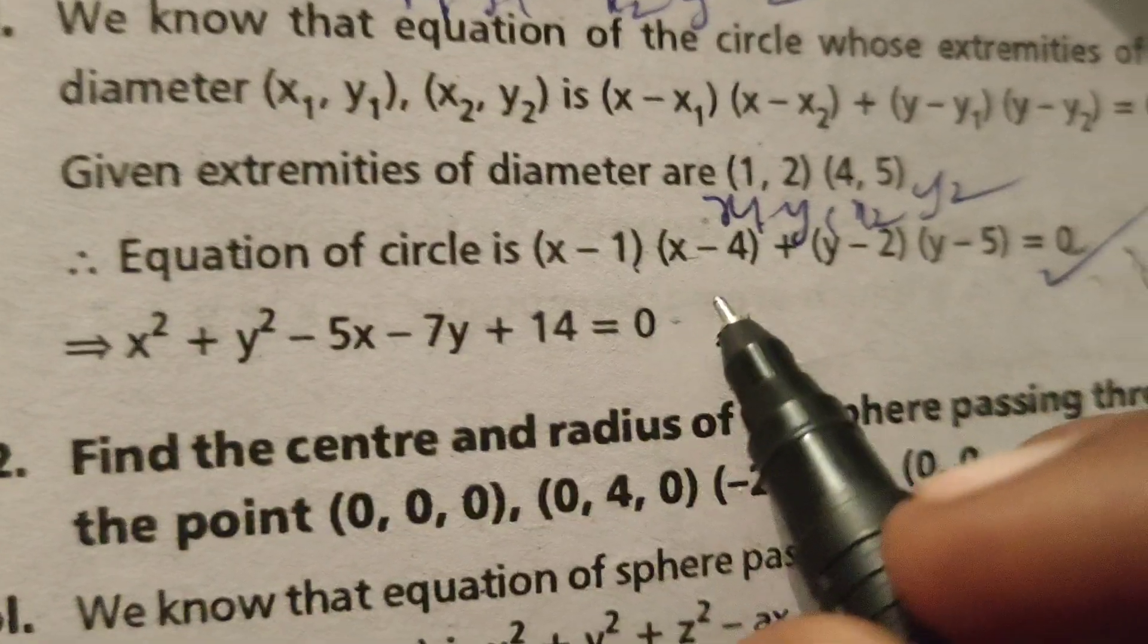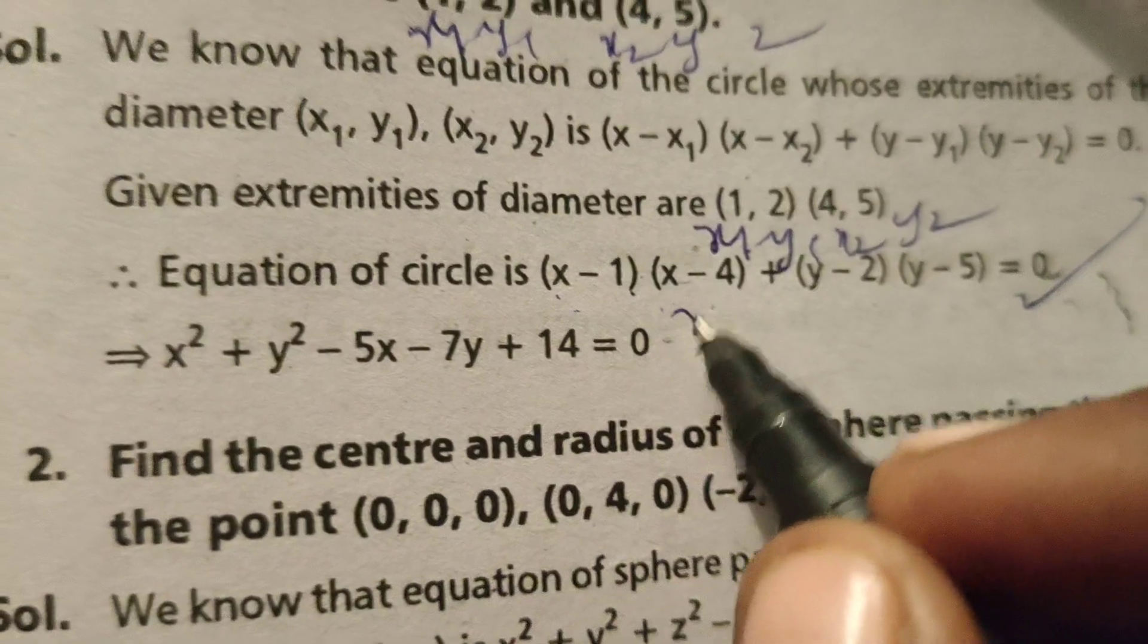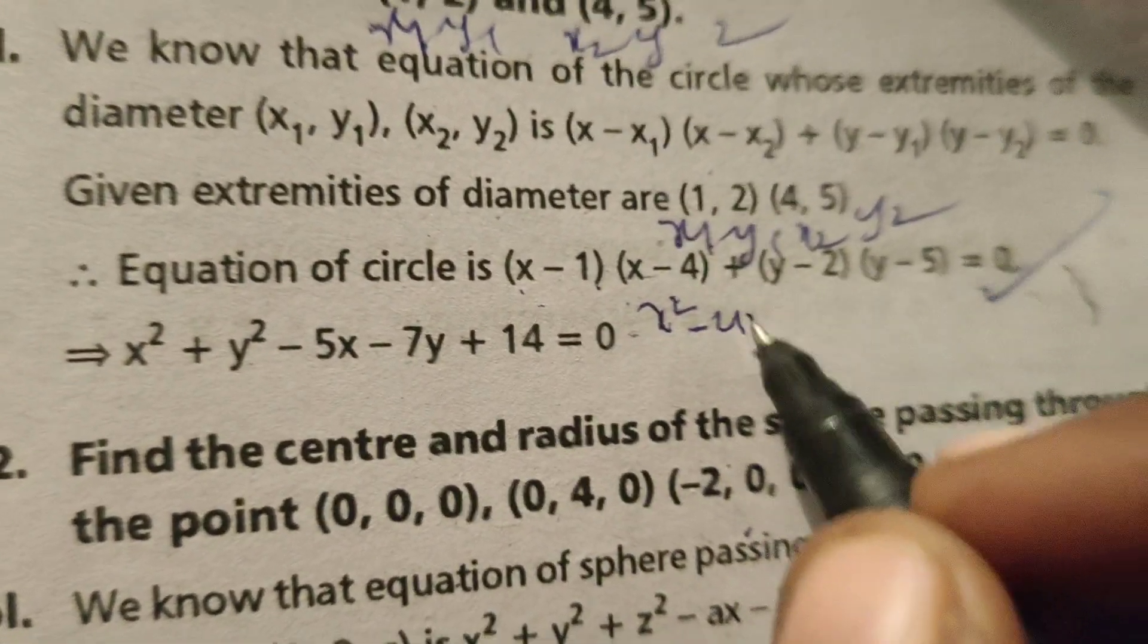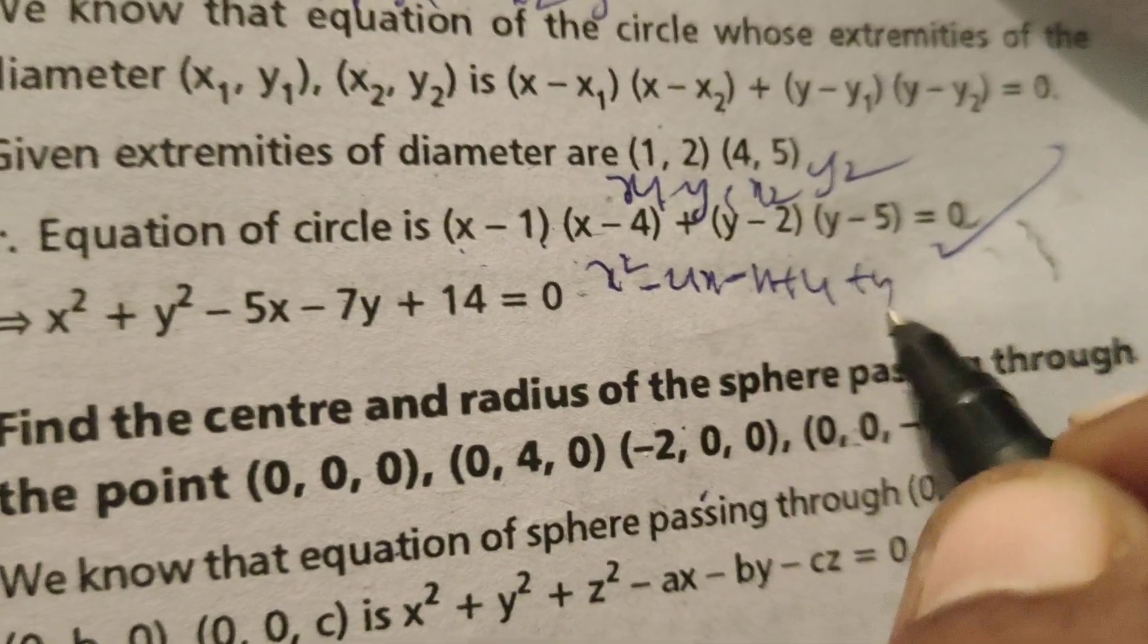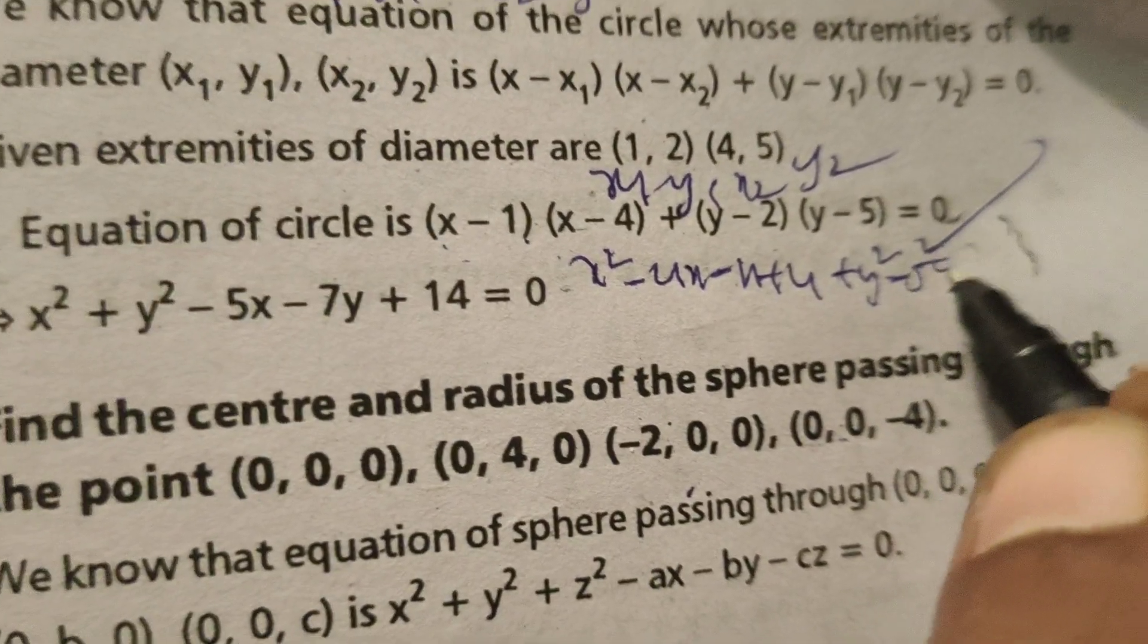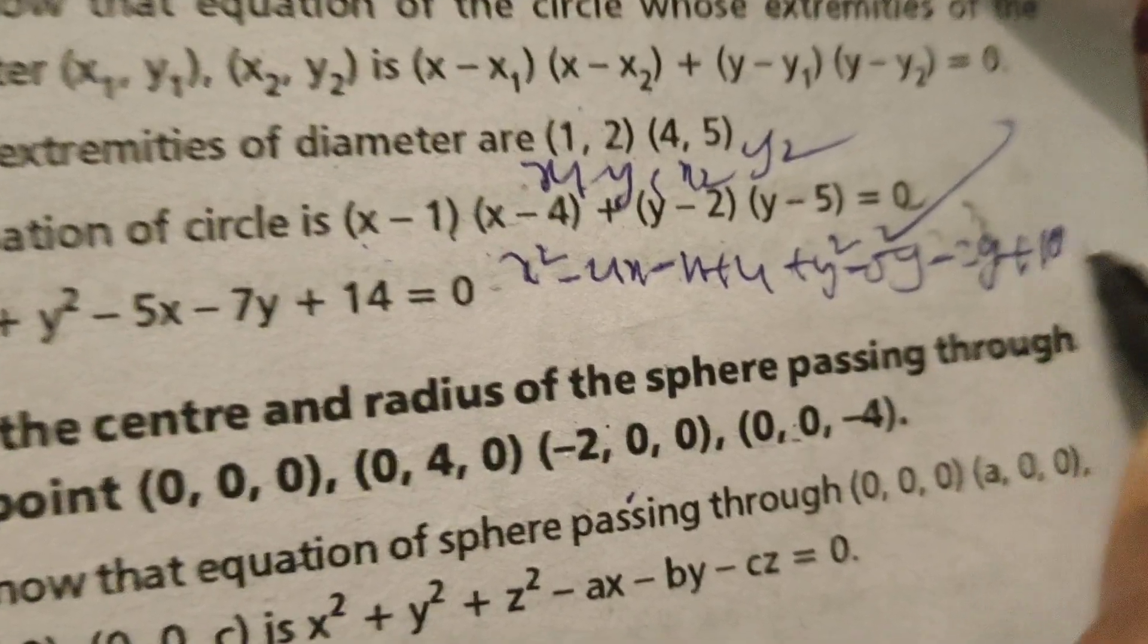Therefore, x² plus, simplify this, x² minus 4x minus x plus 4, y² minus 5y minus 2y plus 10 equals to 0.